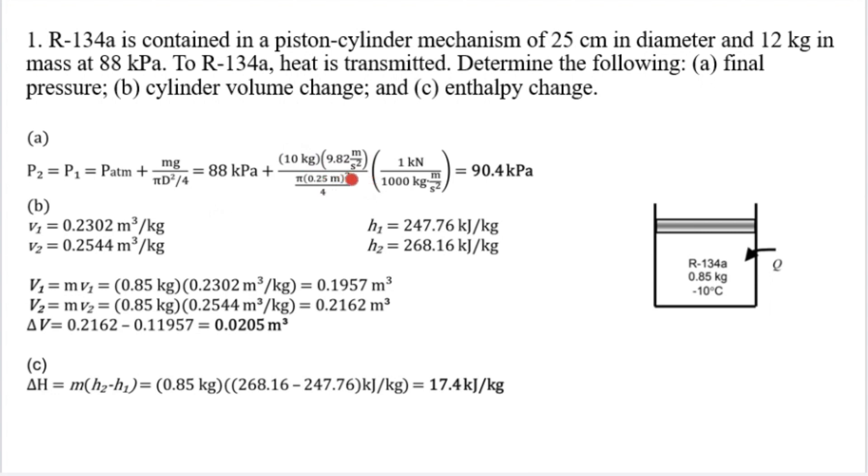Second squared all over pi times 0.25 m squared all over 4, multiply 1 kN all over 1,000 kg times m per second squared. The result is 90.4 kPa.